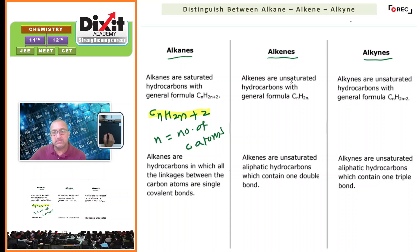Alkenes are unsaturated hydrocarbons with general formula CnH2n. Alkynes are unsaturated hydrocarbons with general formula CnH2n-2.